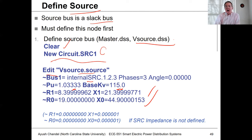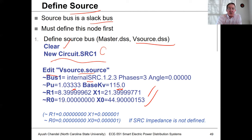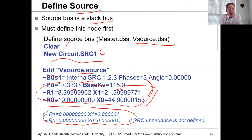One thing to watch out for in OpenDSS: if you don't define any source impedance, OpenDSS requires that you have something entered — it can't be zero. So if you're putting a source in the circuit that has no impedance, just go into this file and put some nominal value of positive and zero sequence impedance like shown here, because otherwise it won't run.